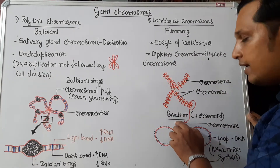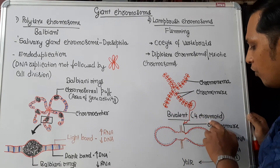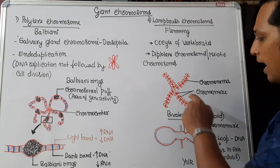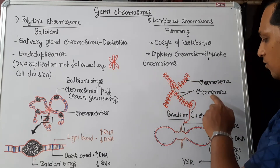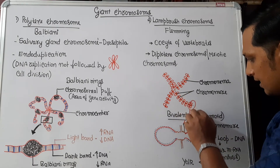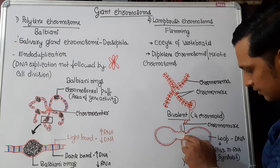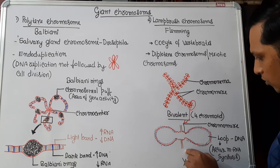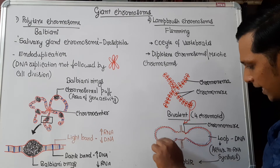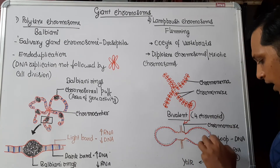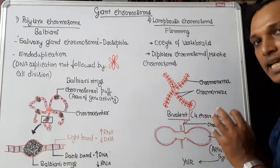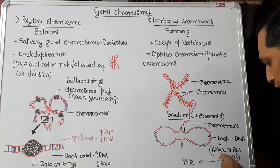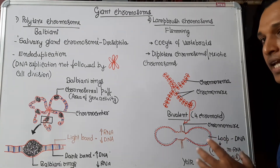Since it exists in the bivalent form, the lampbrush chromosome has four chromatids. There is an axis known as chromonema, which has regular thickenings known as chromomere. From the chromomere, a loop-like structure comes out. These loops are the regions of high DNA content, and this DNA is active, meaning it can undergo transcription. Therefore, loops are the regions of high mRNA synthesis.